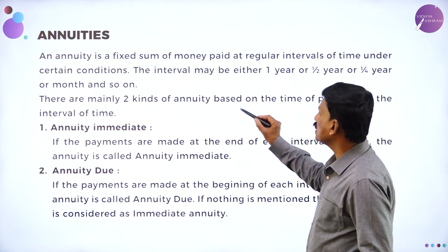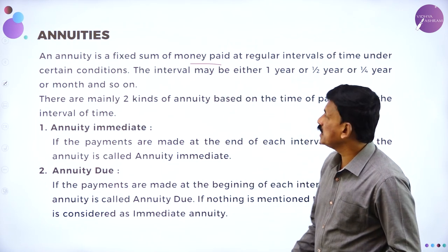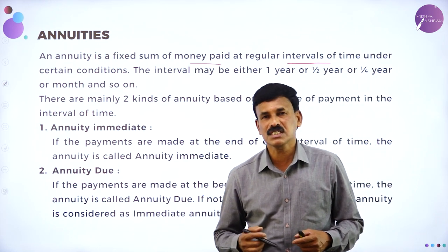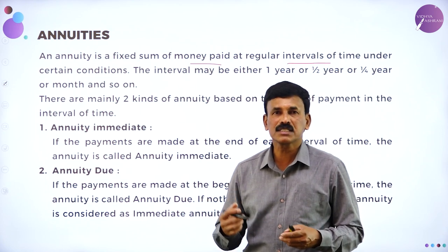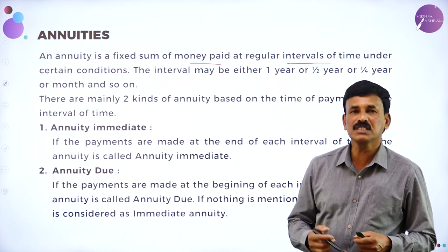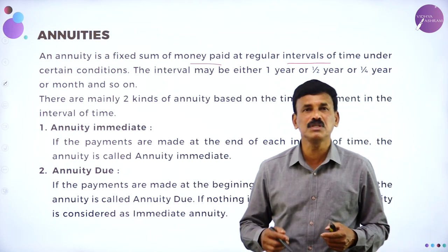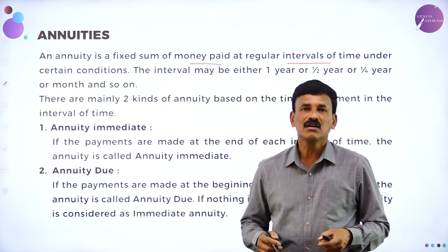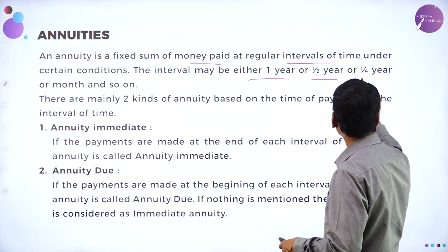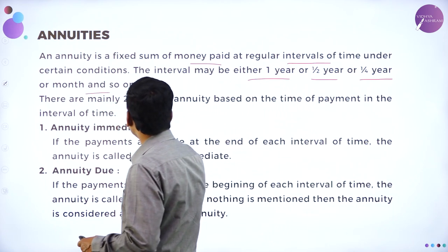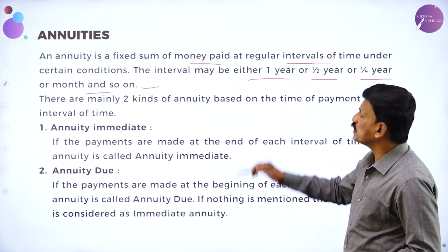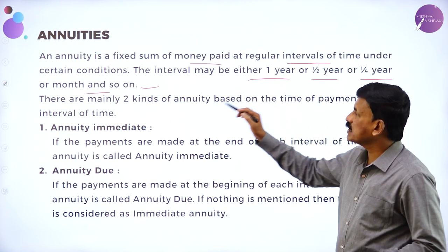An annuity is nothing but a fixed sum of money paid at regular intervals of time under certain conditions. The interval of time may be half a year, quarterly, or a month. The intervals may be either one year, half year, quarter year, or month and so on.